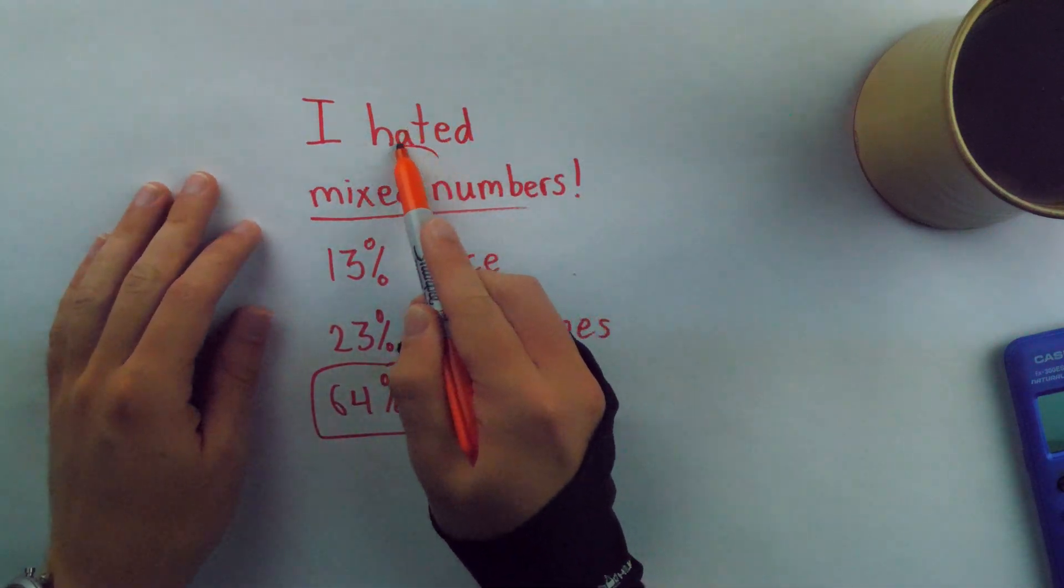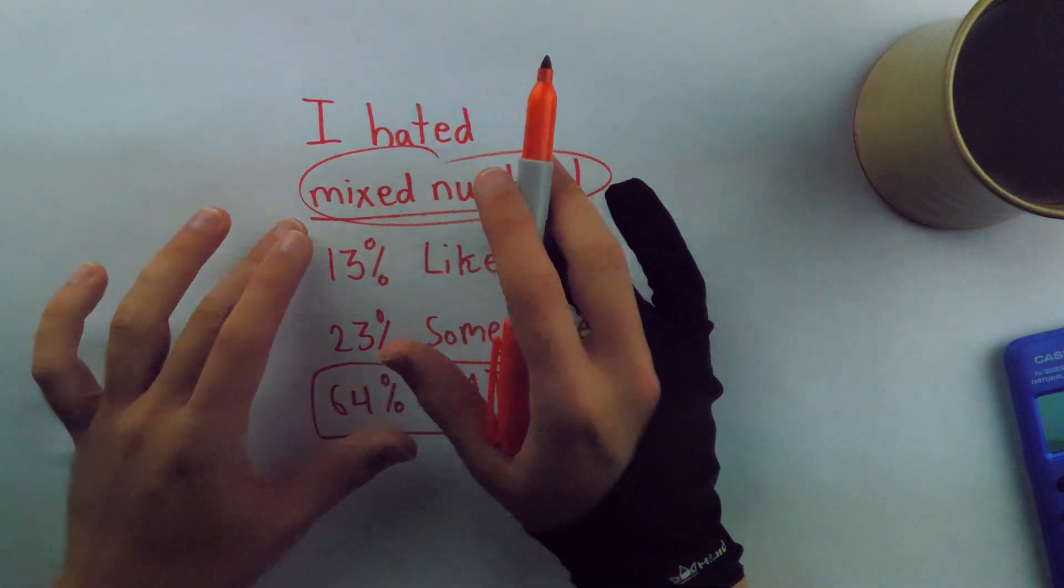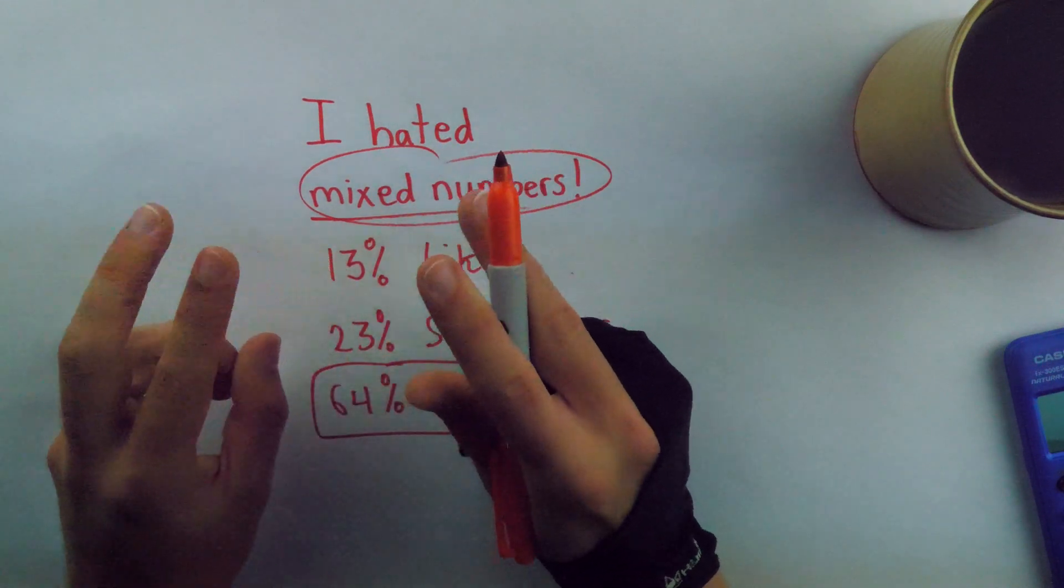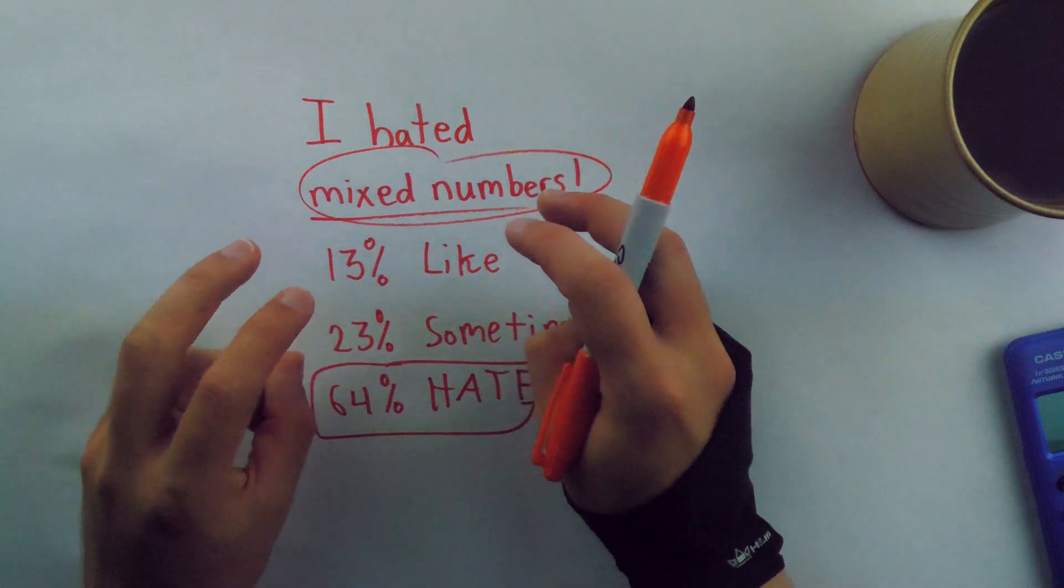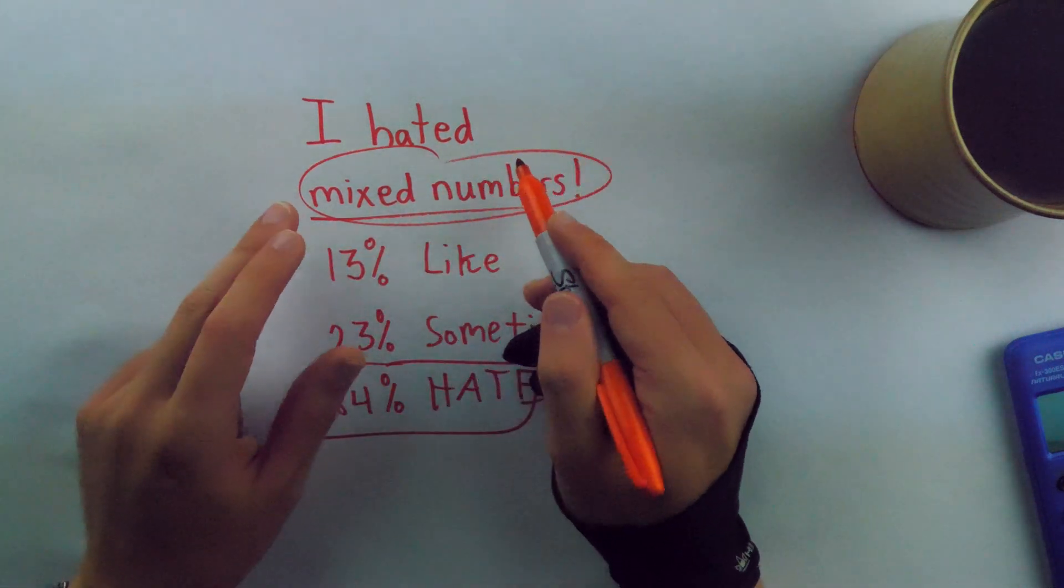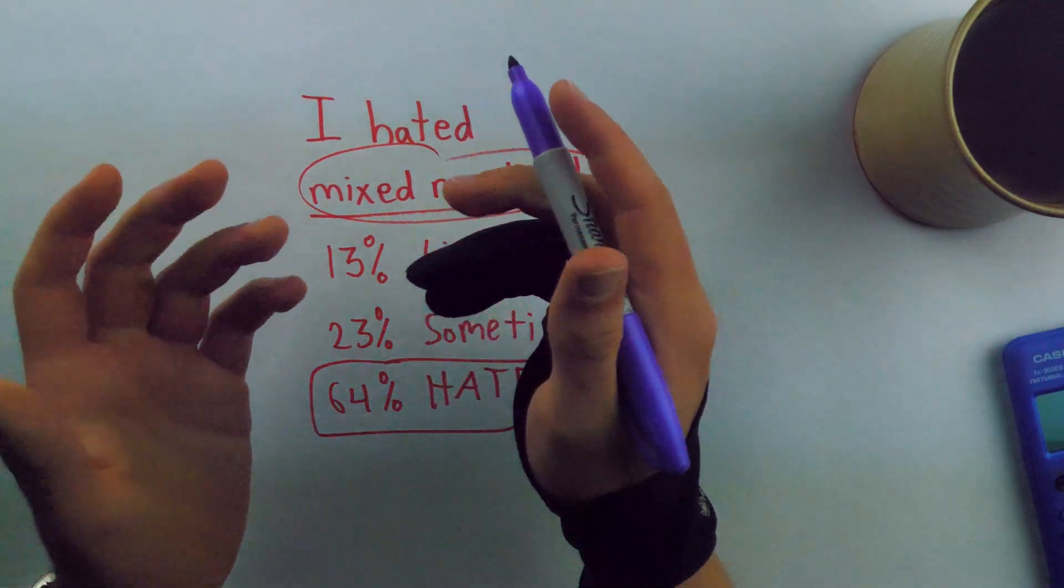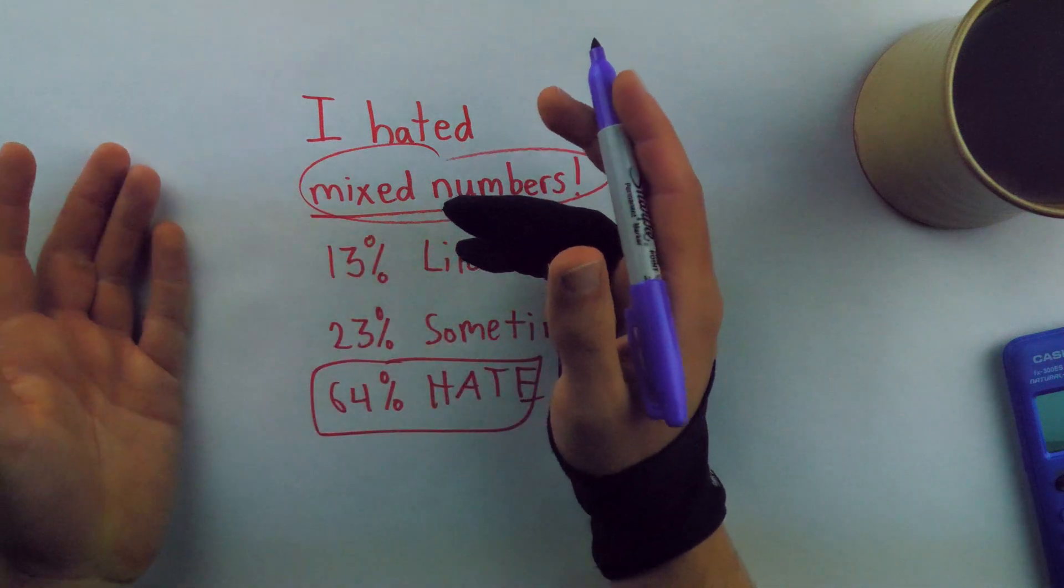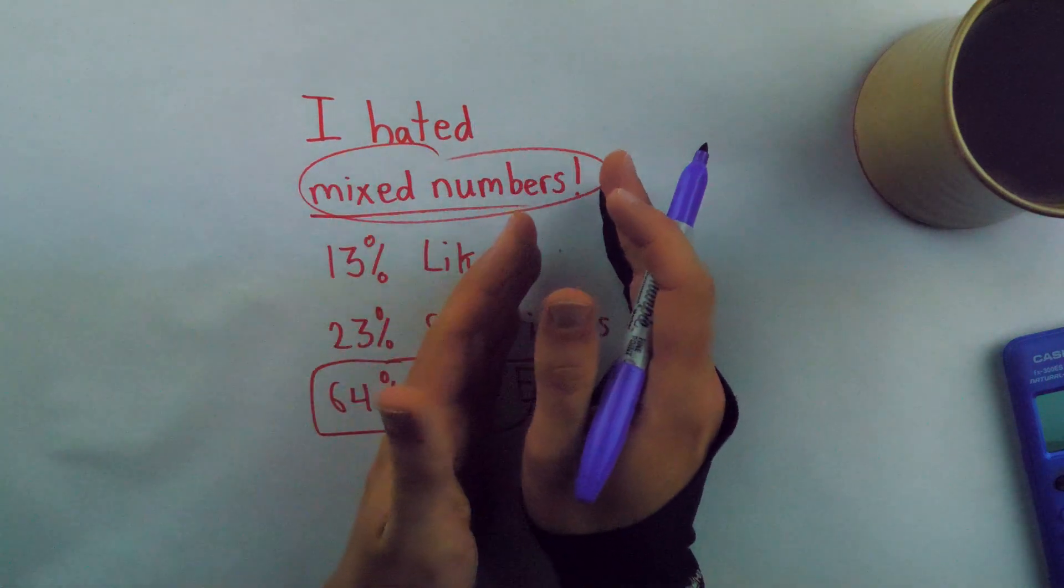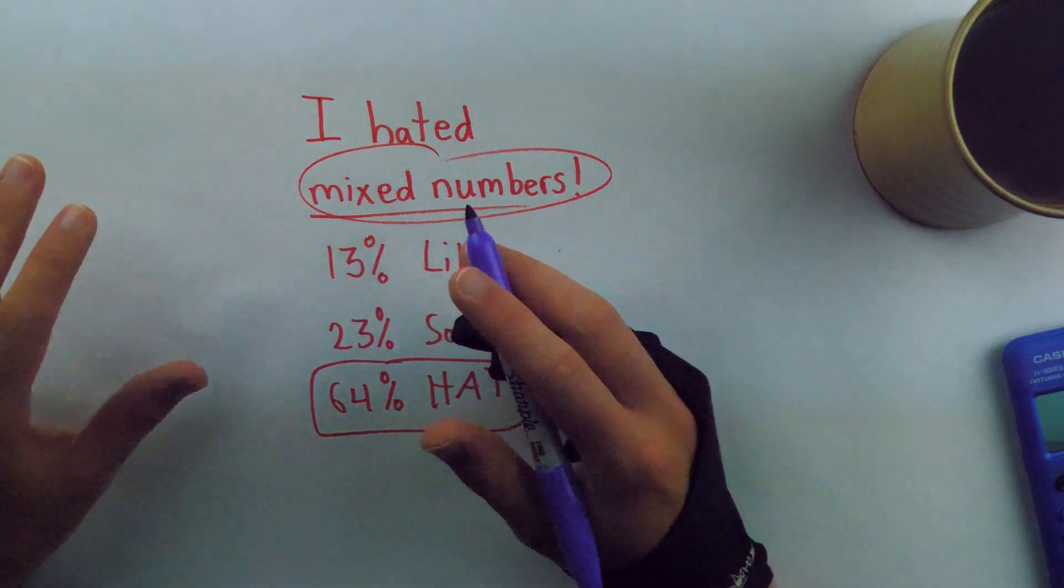But in America, mixed numbers, I think, are the way that students first learn to deal with improper fractions. So improper fractions come later as a sort of advanced alternative to mixed numbers. What the mixed number is, for people who don't know, is taking a number and representing it as a whole and a fractional part.